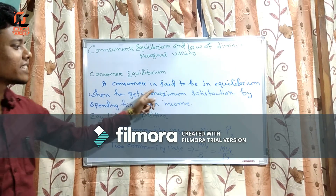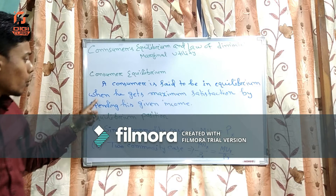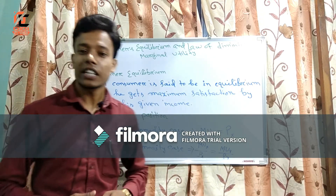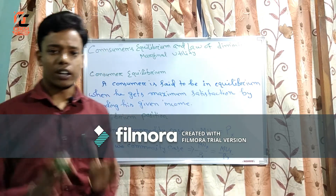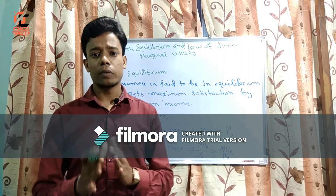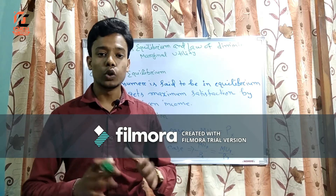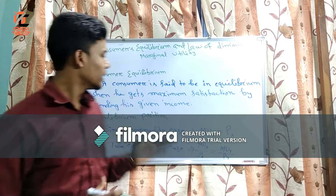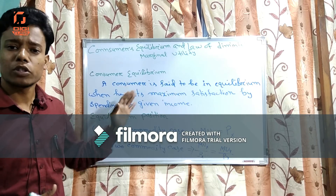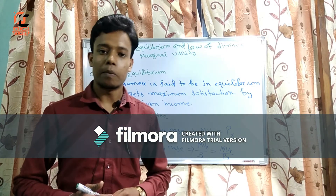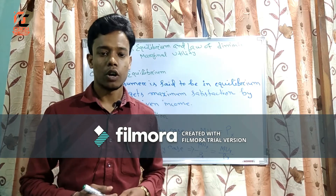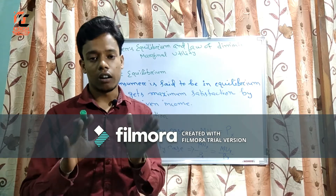A consumer is said to be in equilibrium when he gets maximum satisfaction by spending his given income. Consumer's equilibrium refers to that point from where the consumer does not want to move — that is why this equilibrium is also known as the point of balance, where the consumer is getting maximum satisfaction with his given income.